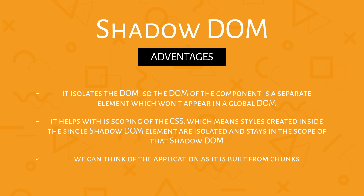Let me tell you about some advantages of Shadow DOM and why it's so useful. First, it isolates the DOM — the DOM of the component is a separate element which won't appear in the global DOM. Another advantage is CSS scoping: styles created inside a single Shadow DOM element are isolated and stay in the scope of that Shadow DOM. This simplifies styling a lot — we don't have to worry about namespace and we can use simple selectors and class names. Also, we can think of the application as built from chunks or components, not as one massive object.